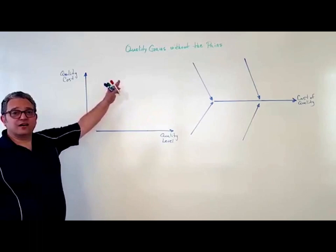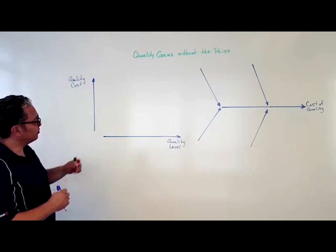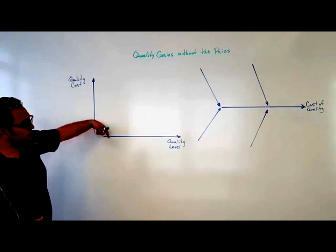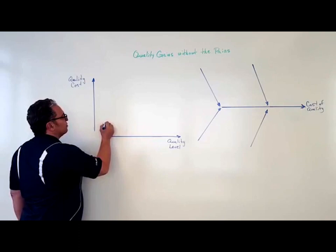Today we're going to talk about quality management and our topic is quality gains without the pain: how do we increase our quality level, make it higher, while decreasing quality costs? In general, the more quality level, the better quality we want, the more we have to spend on quality.